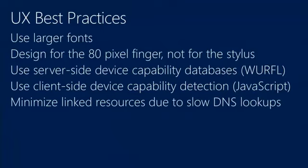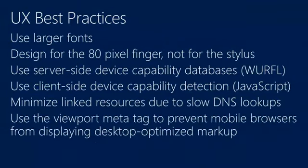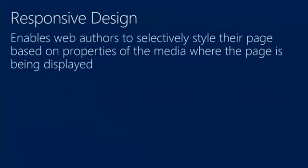Multiple linked resources: if you have lots of hyperlinks in your page pointing to all kinds of other places, DNS lookups happen for all those things and they slow down your page. The viewport meta tag — you put it in there and it takes that giant New York Times page and says, 'I'm looking at a device that's only this big, make it look appropriate for that.' That really helps with markup for mobile devices.